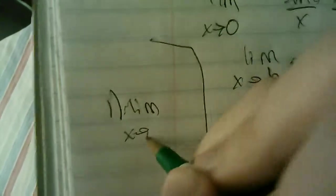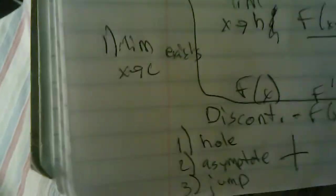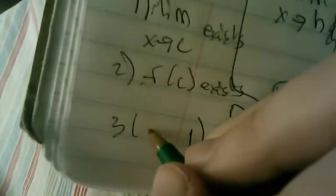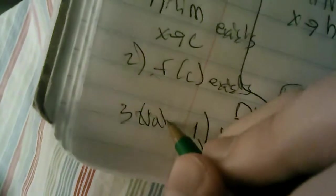So what defines discontinuity? Number one, the limit as x approaches some number exists. Actually, this is where it is continuous. Two, f of c exists. And three, those values are equal.